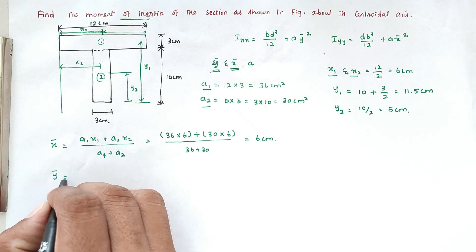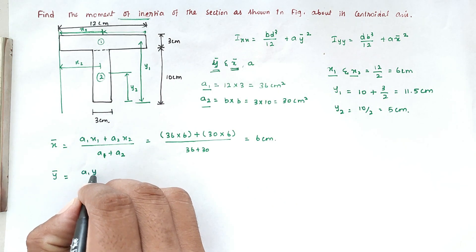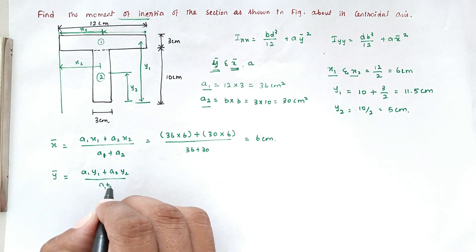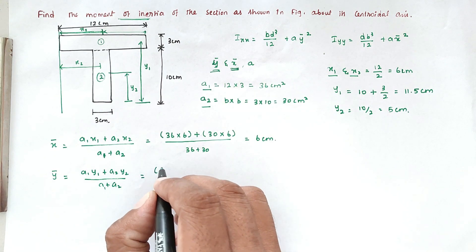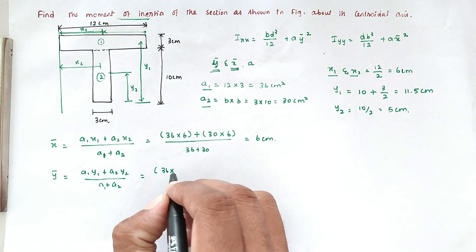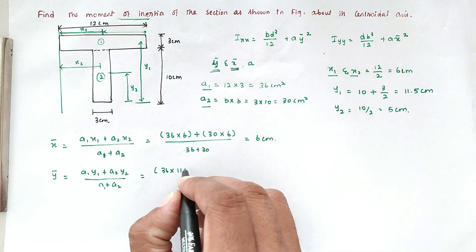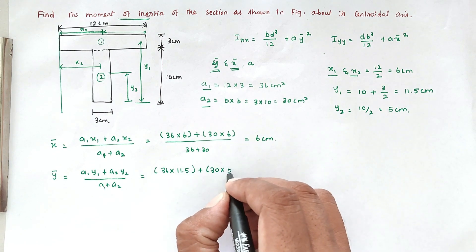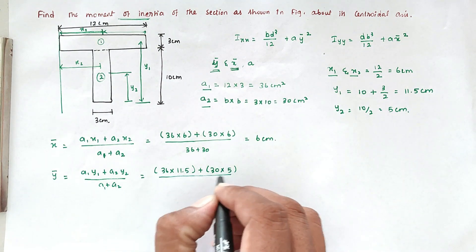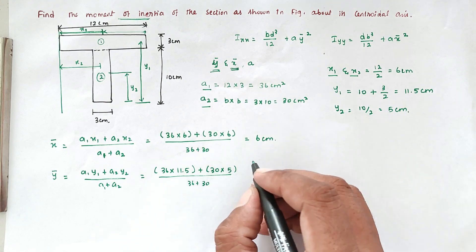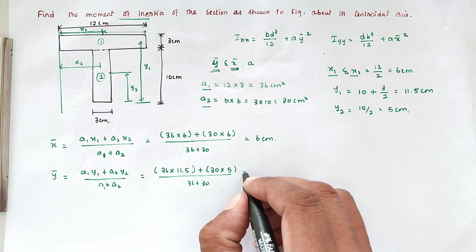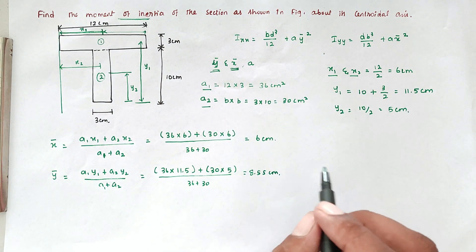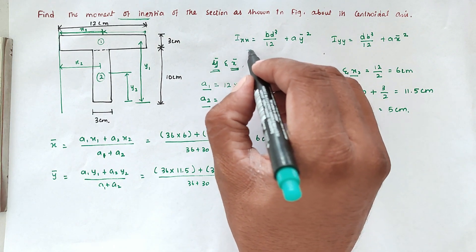For ȳ, the formula is (A1·y1 + A2·y2) divided by (A1 + A2). Substituting: (36 × 11.5 + 30 × 5) divided by (36 + 30). Solving this gives ȳ = 8.55 cm.